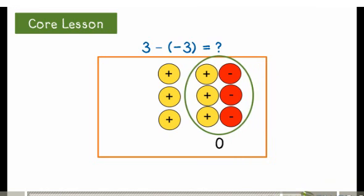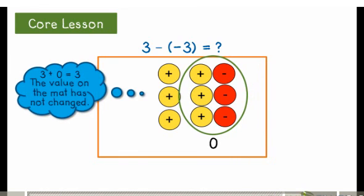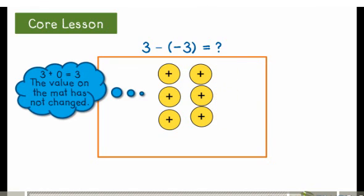I add 3 zero pairs without changing the original value. Now I'm able to remove negative 3 chips. I'm left with a value of positive 6. 3 minus negative 3 equals positive 6.